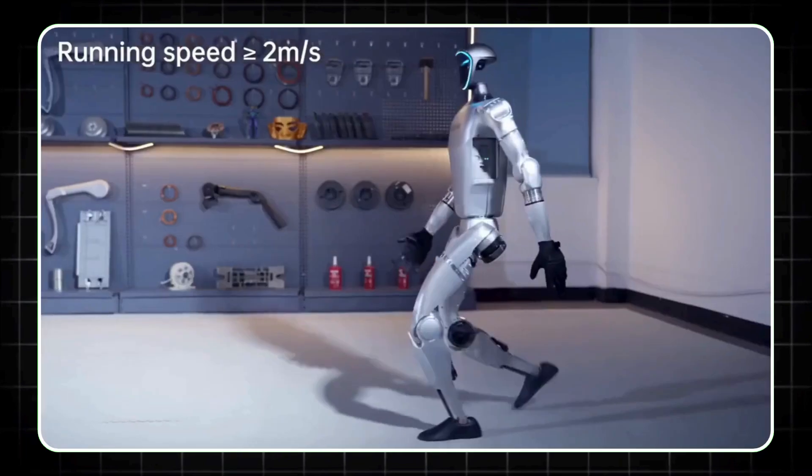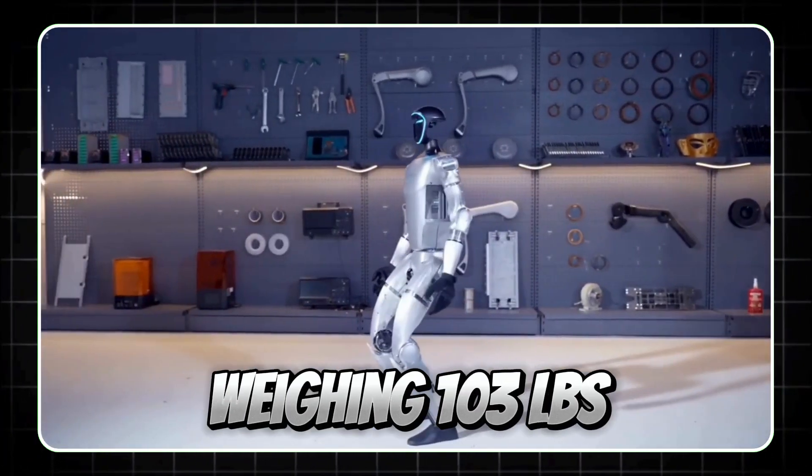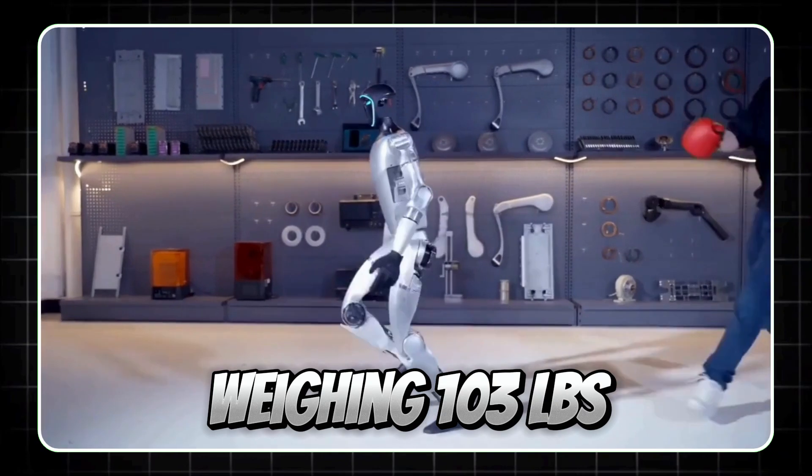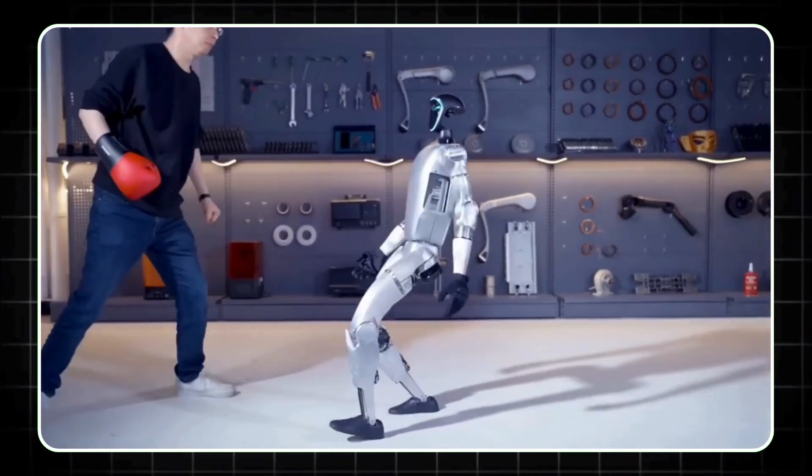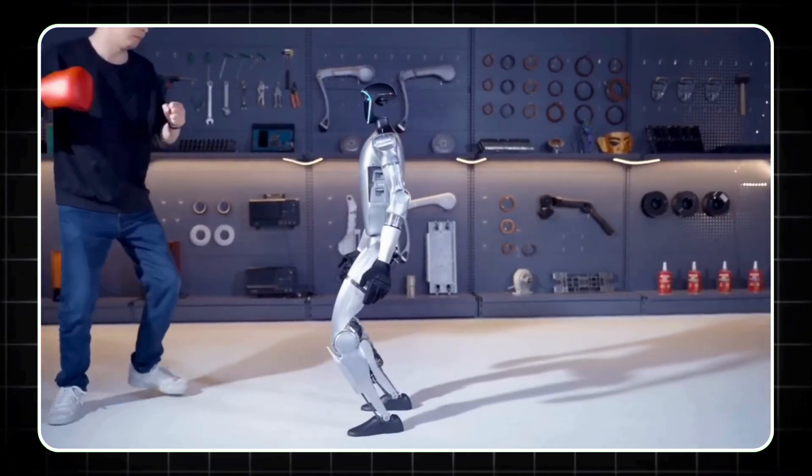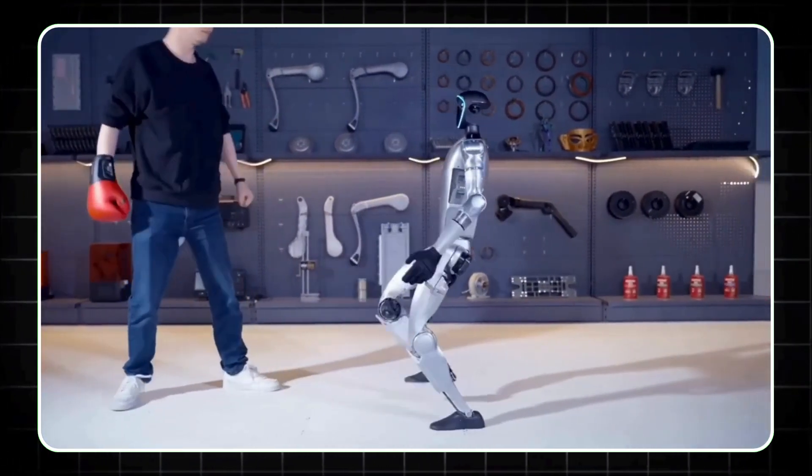Finally, we have the Unitree G1, a humanoid robot that stands at 5'10" and weighs 103 pounds. This robot is designed for speed and agility, capable of walking and running autonomously in diverse environments. The G1 is not just about movement—it's about functionality in real-world applications.